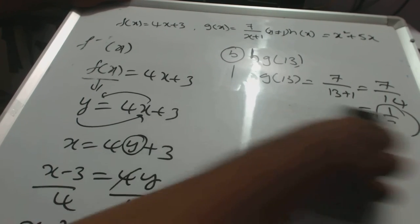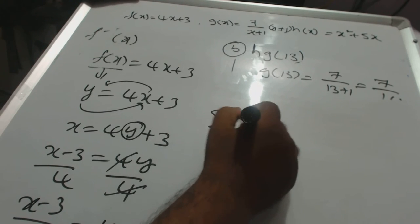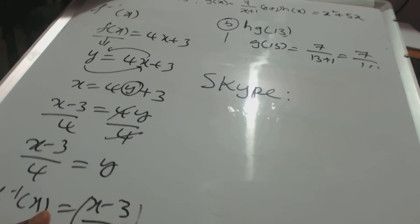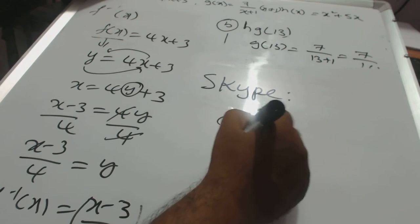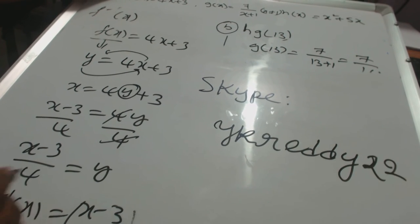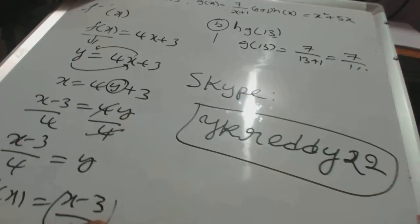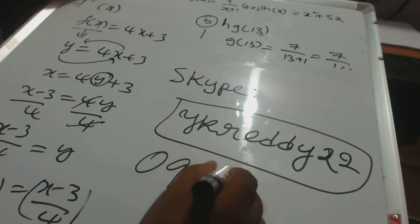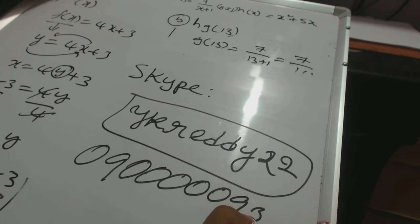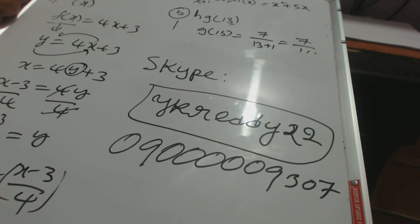Please call on my Skype. You can add my Skype address, then let you know more details. Please add on my Skype address. The mobile number is 09300009307. Please you can call me, thank you.